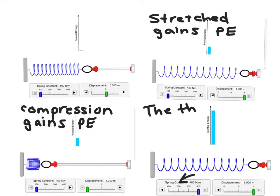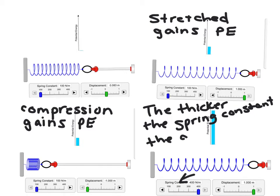So the thicker the spring constant, the greater the elastic potential energy.